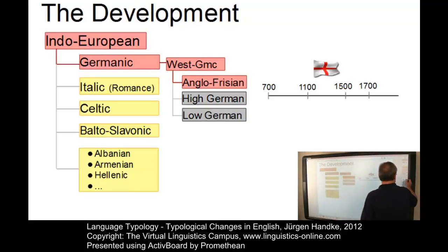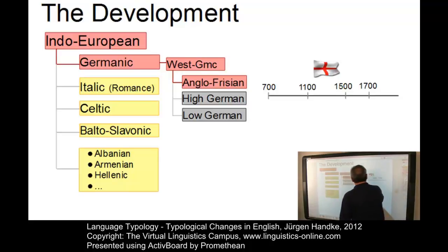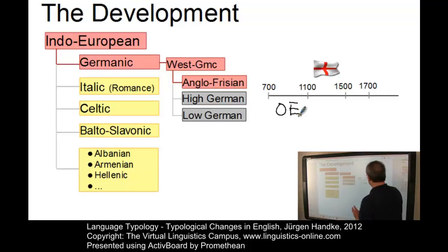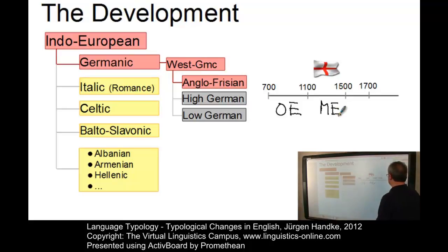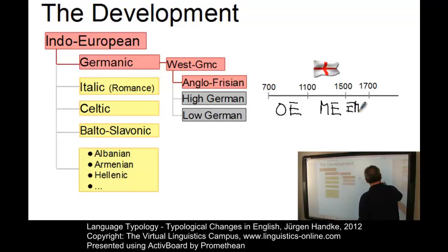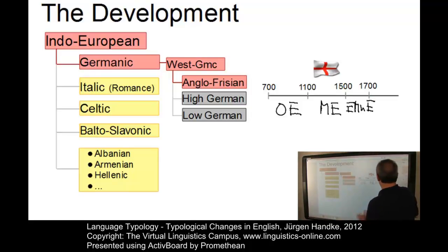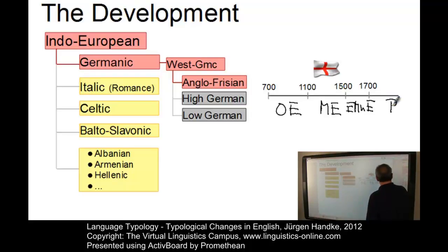For example, the first period is referred to as Old English, abbreviated OE, between 700 and 1100, followed by Middle English, the period between 1100 and 1500. Then there is a relatively short period referred to as Early Modern English, EMnE, the period between 1500 and 1700. And last but not least, the present-day period is referred to as Present Day English or PDE.